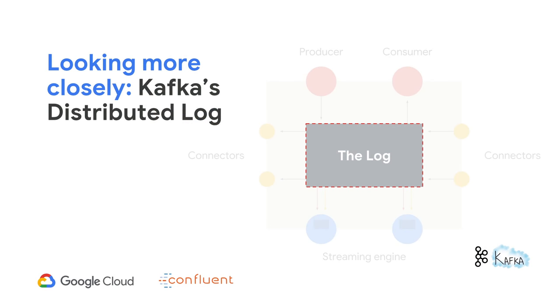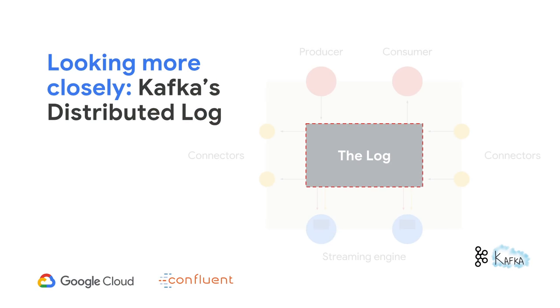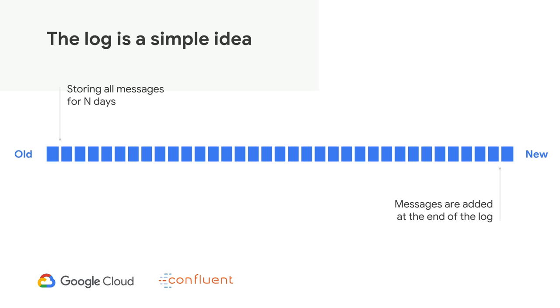Let's look at the components that make up this platform. The core component is the Kafka brokers, also called a log or a distributed log. There is a famous book by my CEO called 'I Heart Logs,' where he explains that a log is the fundamental data structure of all modern computing. A log is where you write things at the end and store the structure in order for a set amount of time — which could be forever. It can be your application log, a click stream, or a credit card authorization attempt — an event is anything that has happened.